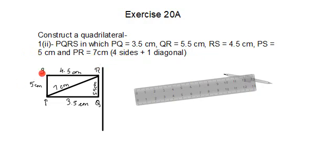Here on the left hand side I have got the rough figure. You can see we have PQRS and all the sides are labeled along with the diagonal that is PR. So we are going to begin really quickly without wasting any time.